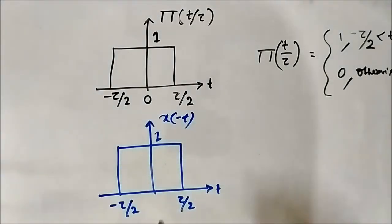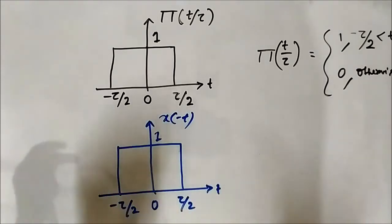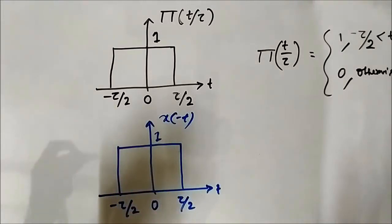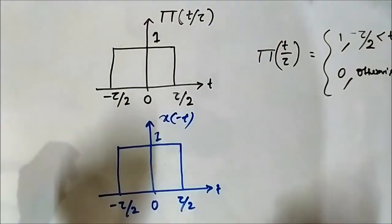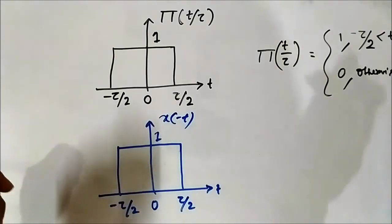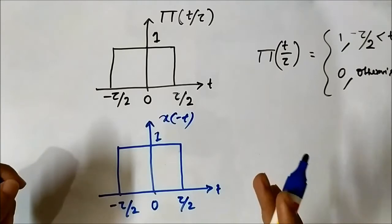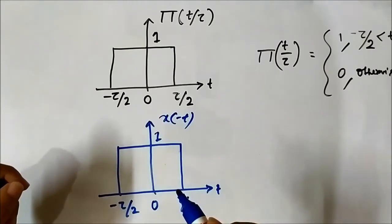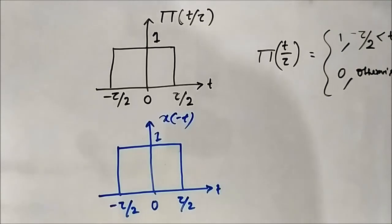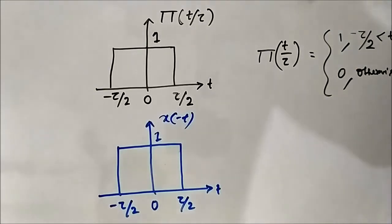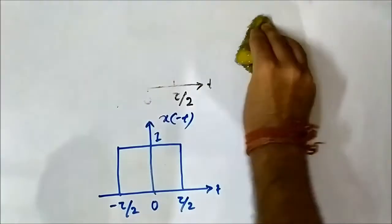So what do we conclude from here? It means for even signals, which are symmetric around the vertical axis — even functions of T — even if we perform time reversal, we will get the same signal; it will cause no change. Similarly, we can also take the example of the triangular pulse function, which I have already discussed.